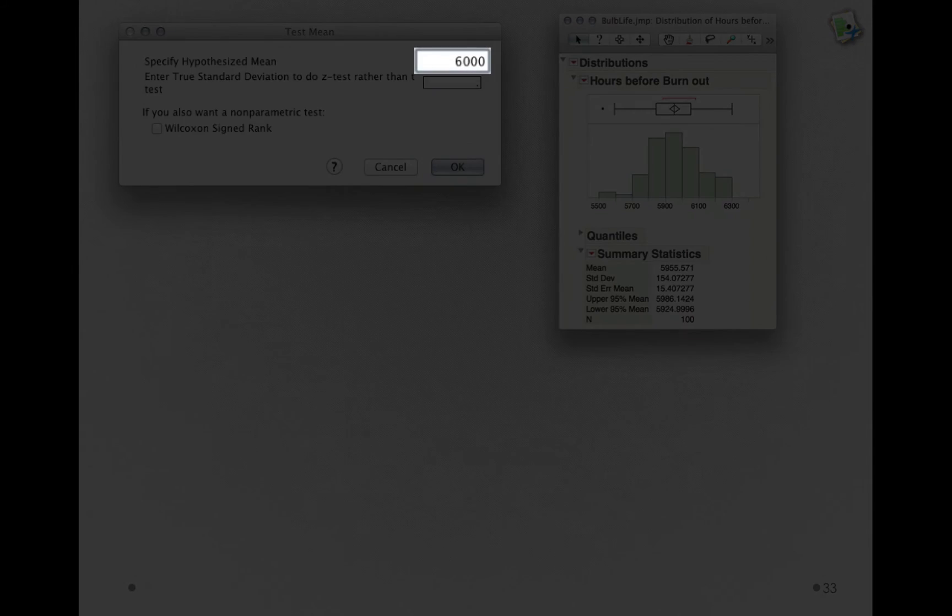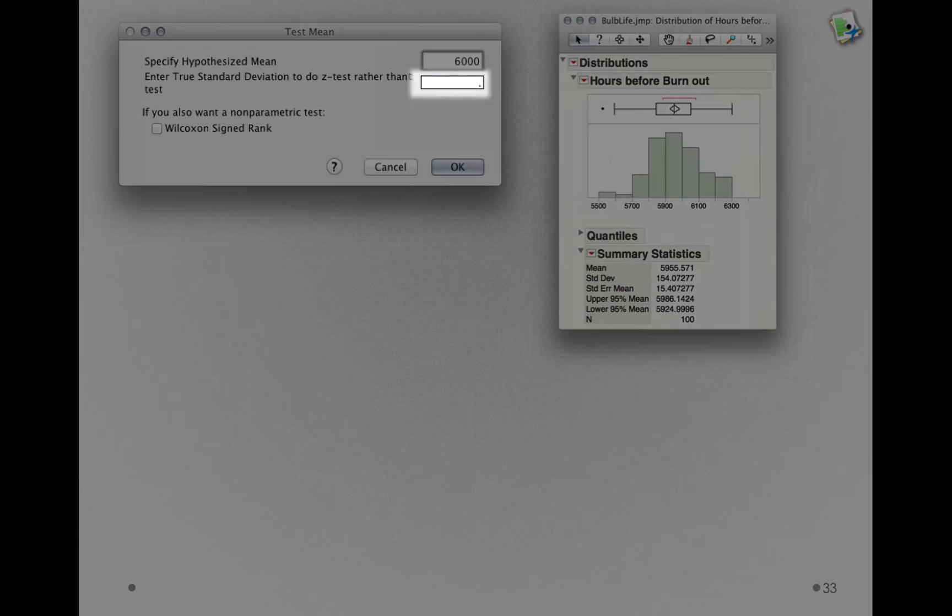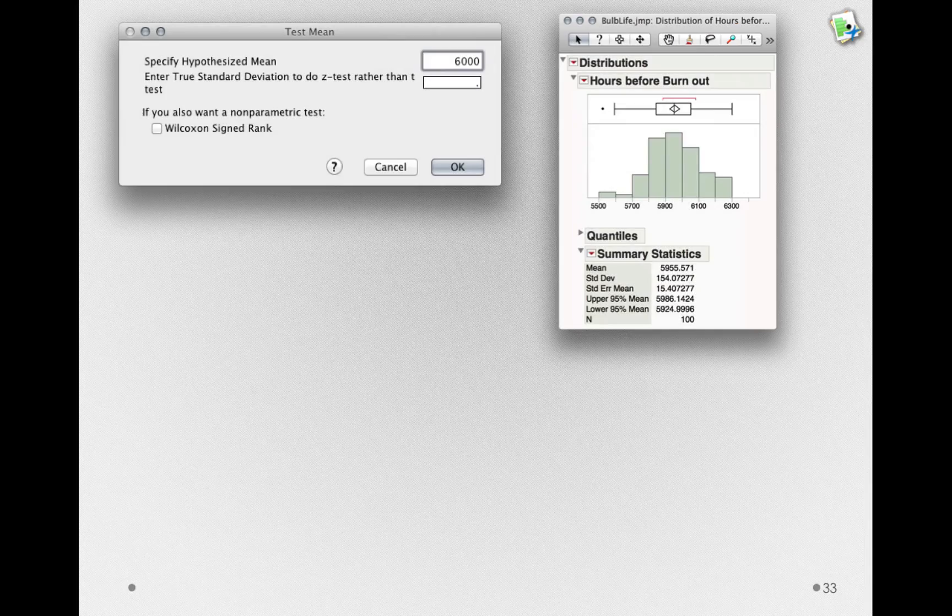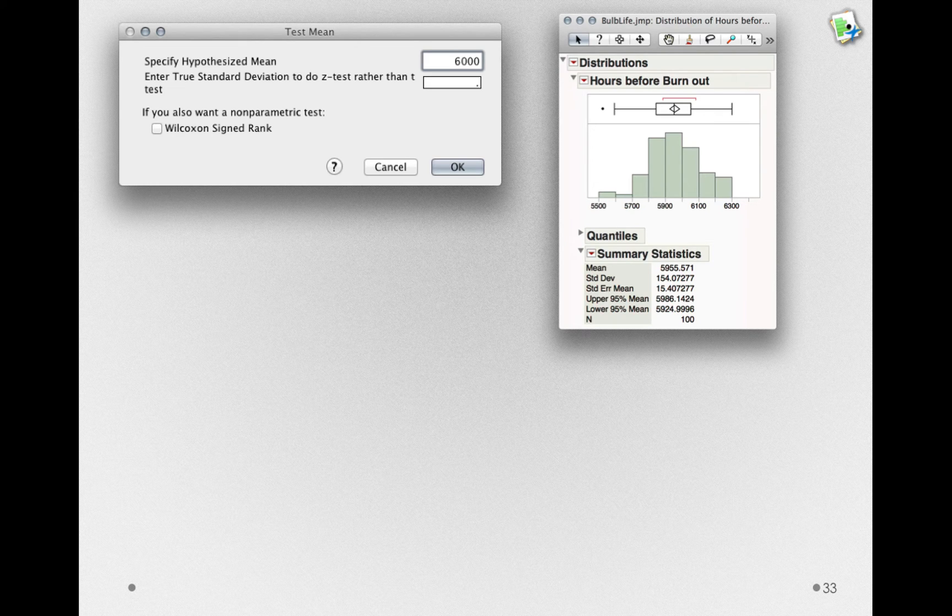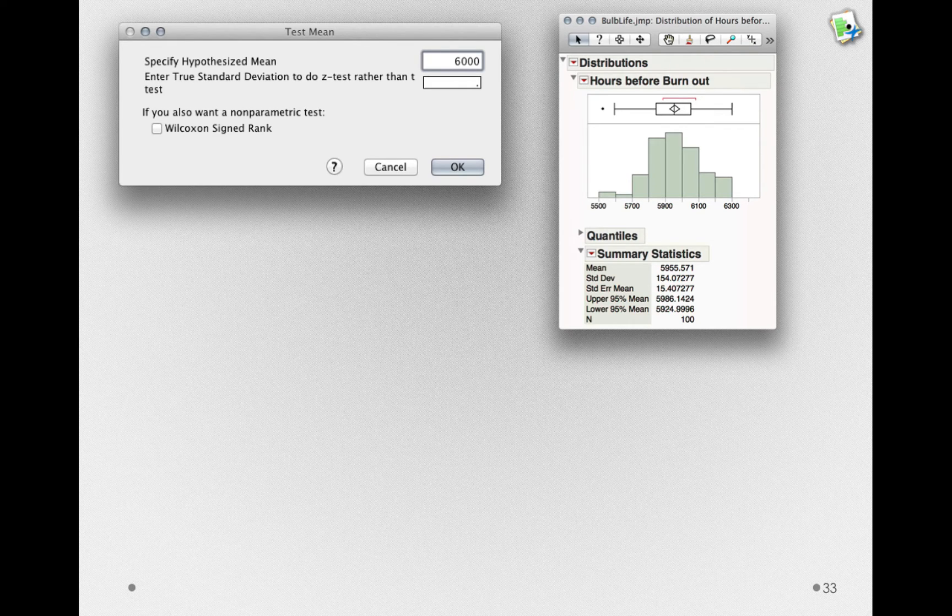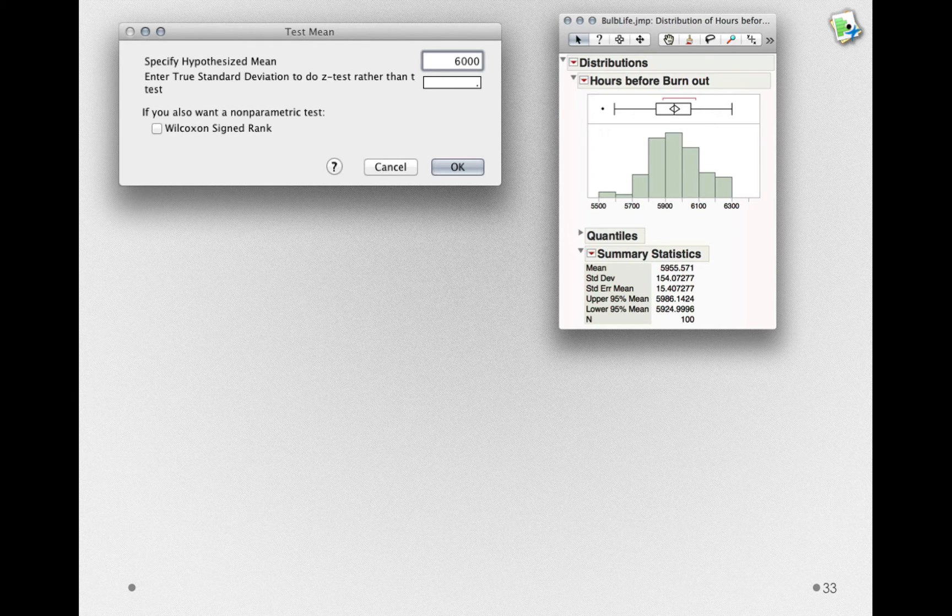Under the Test Mean section, we'll enter 6,000 as our hypothesized mean, but this time we will not enter a standard deviation. We don't know the standard deviation of the population, so we can't enter it here. Instead, JUMP will use our standard deviation of the sample as an estimate of the population, and in so doing, we'll have a calculated estimated standard error rather than a true standard error.